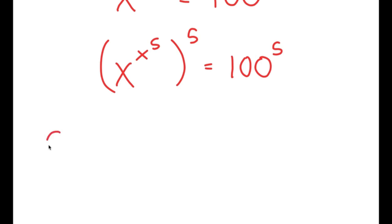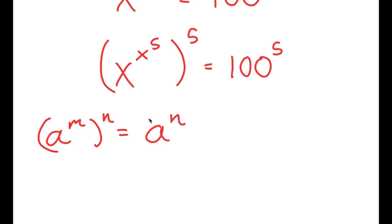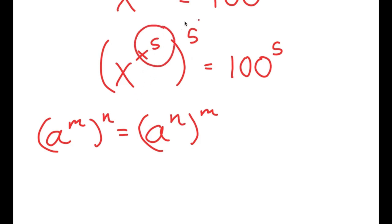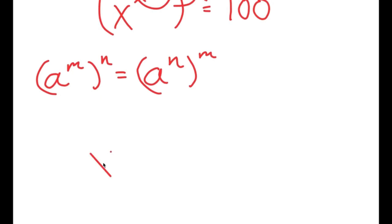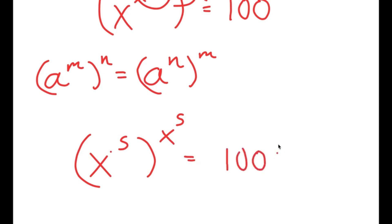I can use the property a to the power of m to the power of n is equal to a to the power of n to the power of m on x to the power of x to the power of 5 to the power of 5. We can think of x to the power of 5 as m and 5 as n, so I can switch the places of these two. Now I get x to the power of x to the power of x to the power of 5 is equal to 100 to the power of 5.